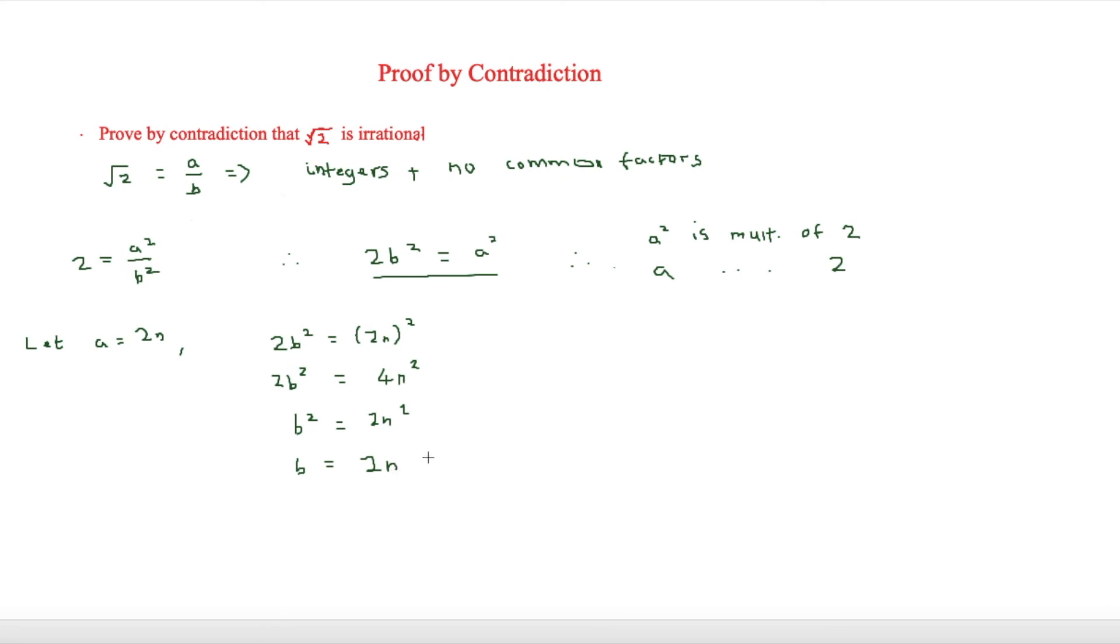Now this is the important part because now we know that b is a multiple of 2. So this is important because as both a is a multiple of 2 and b is a multiple of 2,